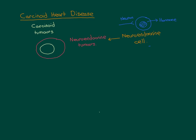Famous examples of neuroendocrine cells are the adrenal chromaffin cells — the cells at the centre of the adrenal medulla that release adrenaline under the control of neurons. Another example is the anterior pituitary gland cells, which secrete all sorts of hormones under the control of the hypothalamus, which consists of neurons.